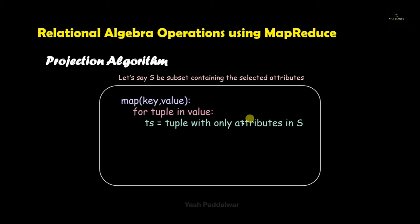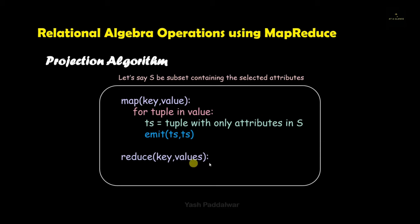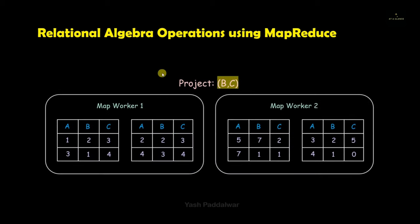For example, if we are projecting the attributes name and age, then all the records under those attributes will be stored in the variable ts. Finally, these tuples stored inside ts will be emitted. That was the Map task. Inside the Reduce task, we will specifically be emitting the key associated with the selected tuples. I hope the algorithm is clear. Now keeping this algorithm in mind, we will solve this example of projection.